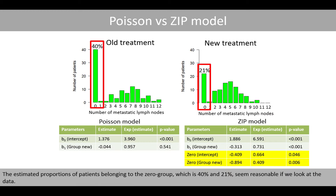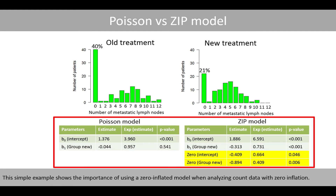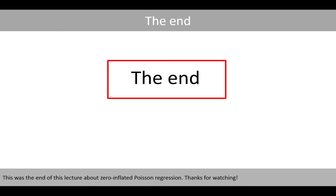The estimated proportions of patients belonging to the zero group — 40% for the old treatment and 21% for the new treatment — seem reasonable given the data. This simple example shows the importance of using a zero-inflated model when analyzing count data with zero inflation. This was the end of this lecture about zero-inflated Poisson regression. Thanks for watching.